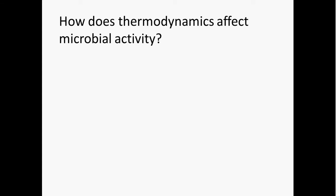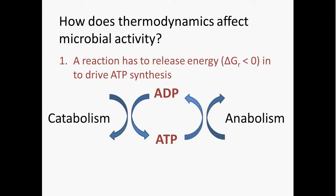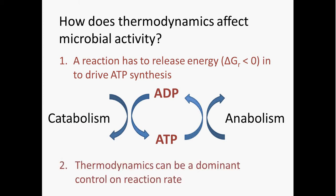So the question that we're after here is how does thermodynamics affect microbial activity? Well, at its most basic level, it's clear that a reaction has to release energy in order to drive ATP synthesis. In other words, the reaction has to have a negative delta G. Otherwise, a chemotroph can't really use it.